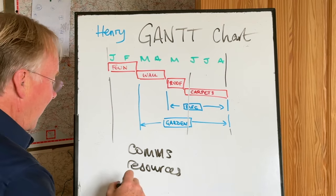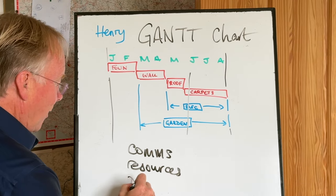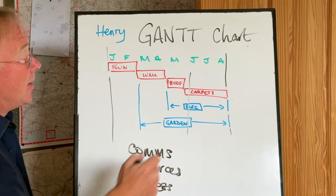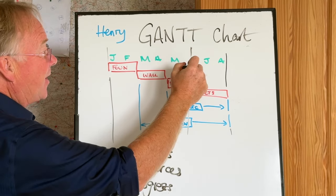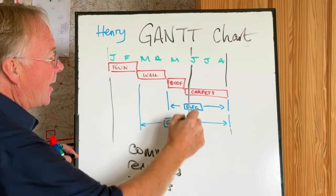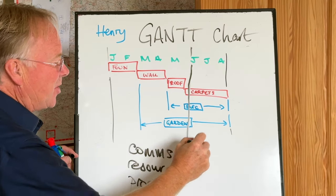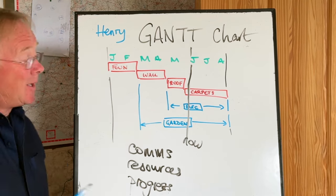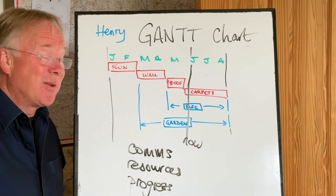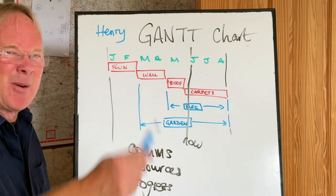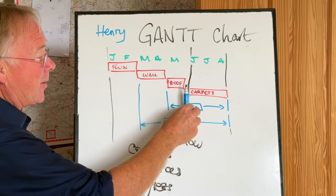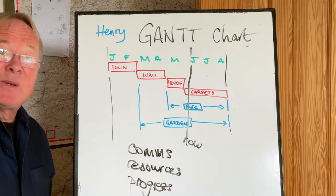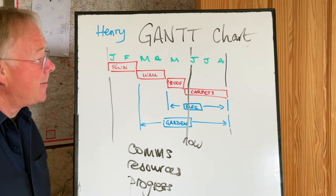And then finally, you can monitor your progress using your Gantt chart. Let's suppose it is June — you have a thing called the Now Line. This used to be a piece of string, but obviously this would all be on a computer now. Excel is probably the best way to do it, but there are software programs that do it. You have the Now Line that moves along, and the game is to try to keep up with the Now Line.